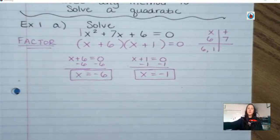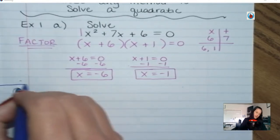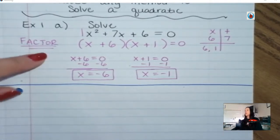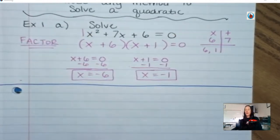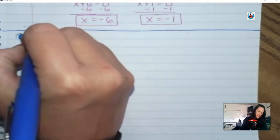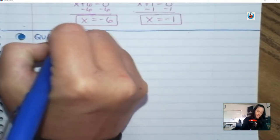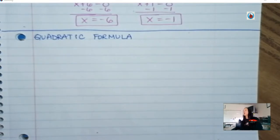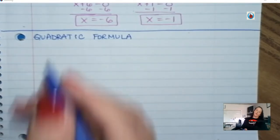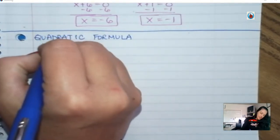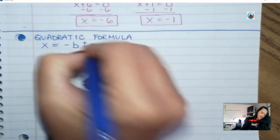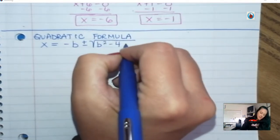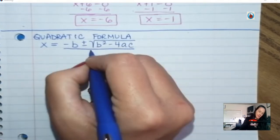The other way we've been working on — and most people I know prefer quadratic formula — so we're going to practice this with the quadratic formula. The nice thing is quadratic formula always works. Factoring is not always going to work. Not every single quadratic equation can be factored, so eventually you're going to have to do quadratic formula anyhow. Hopefully you have that memorized from the song: x is equal to negative b plus or minus the square root of b squared minus 4ac, all over 2a.